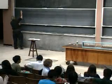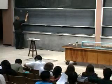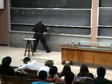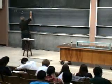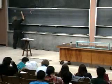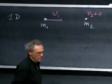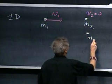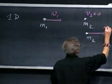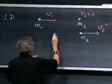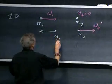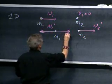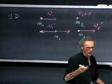Let's take a one-dimensional case. We have here M1 and we have here M2, and to make life a little easy, we'll make V2 zero. This particle has velocity V1. After the collision, M2 has a velocity V2 prime, and M1 has a velocity V1 prime. I don't even know whether it's in this direction or whether it is in that direction — you will see that either one is possible.